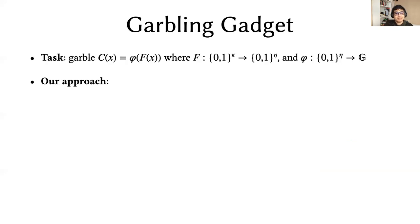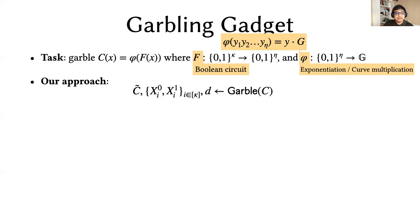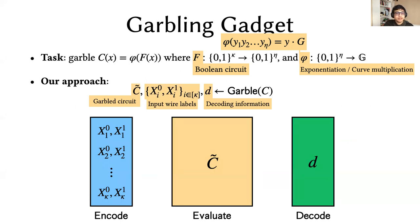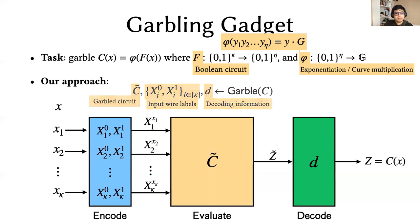We face the task at hand as garbling a circuit C that can be expressed as φ applied to F, where F is a Boolean circuit, and φ takes in the bit representation of some λ-bit value Y and outputs the elliptical point Y times G. Consider the standard sequence in garbling a circuit: we start with the decomposition of the input X, and then we encode it using these capital X values. That's simply just choosing the appropriate capital X values. We evaluate them with the garbled circuit C tilde to obtain an encoded output Z tilde, which can then be decoded to get the clear outcome Z of the computation.